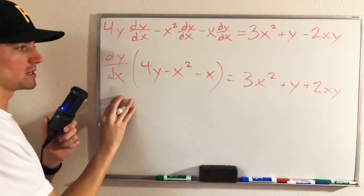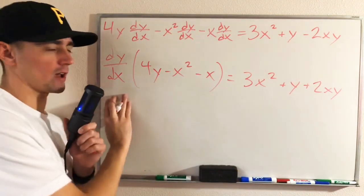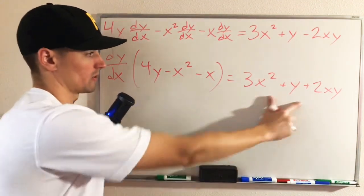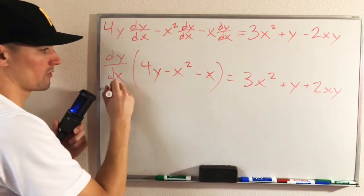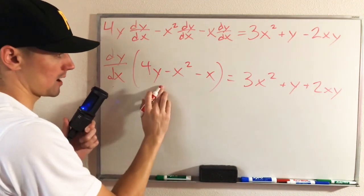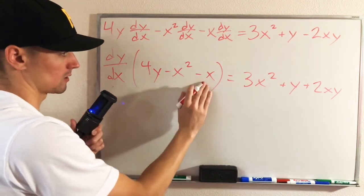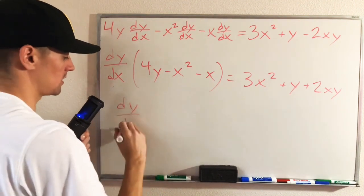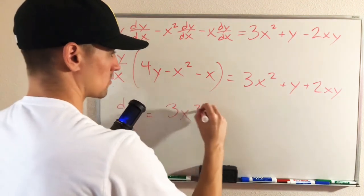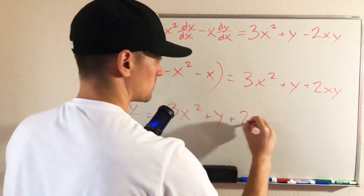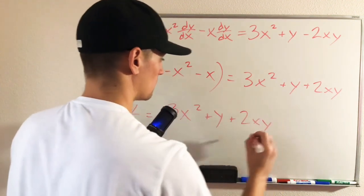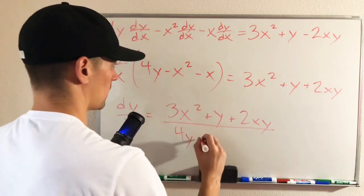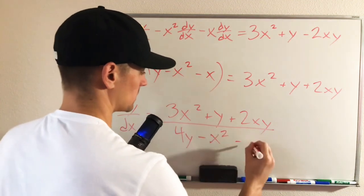And now since we're trying to find dy/dx, all we have to do is divide this whole piece over to the other side. So dividing both sides by 4y minus x squared minus x, we're just going to be left with dy/dx equals 3x squared plus y plus 2xy, all over 4y minus x squared minus x.